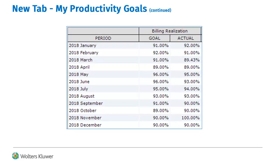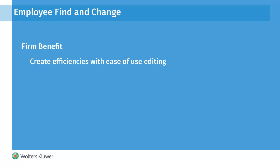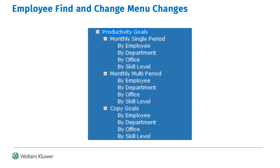Billing realization goals, now entered per period, are included with the actual percentages. Employee goal Find and Change includes label changes. Productivity Goals replaces Budgets on the employee Find and Change navigation bar. Budget Hours is replaced with Monthly Single Period if using monthly for the firm periods and editing a single firm period.